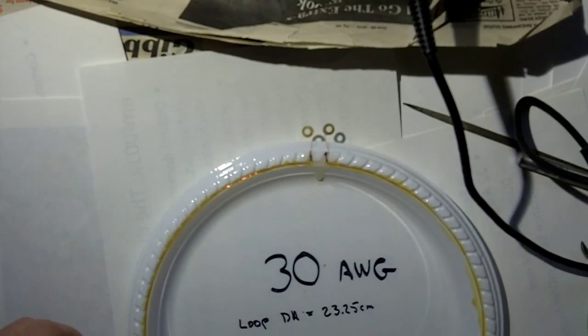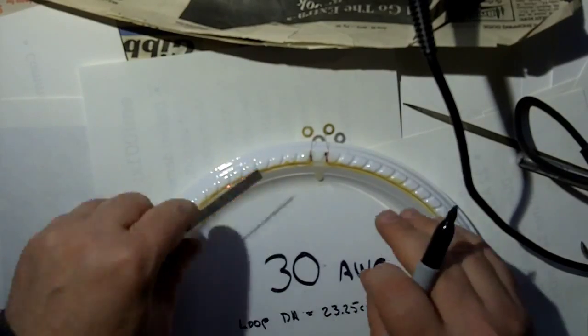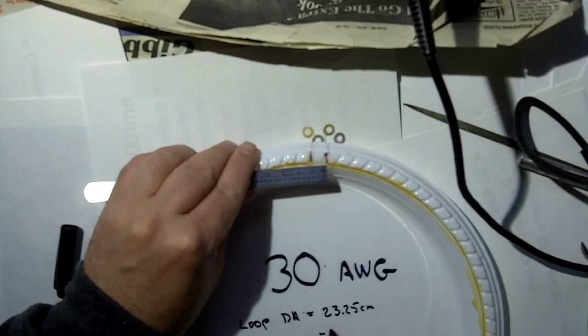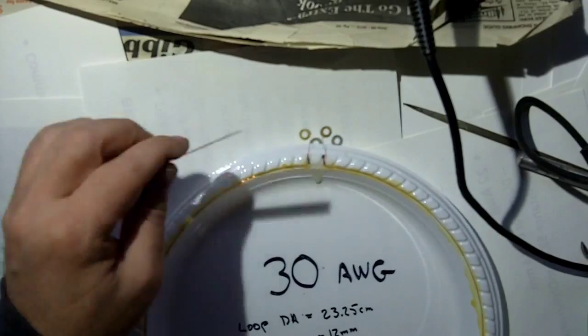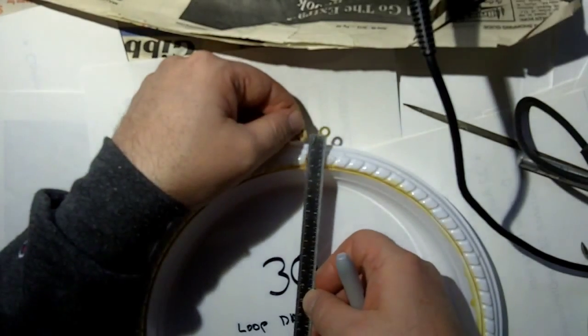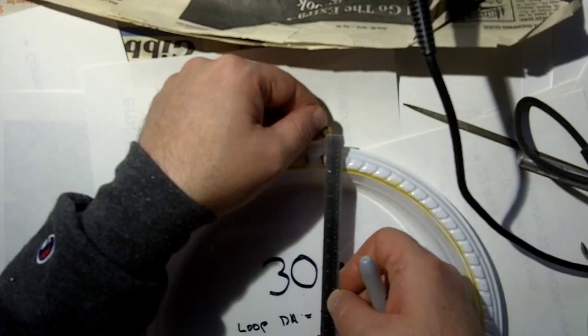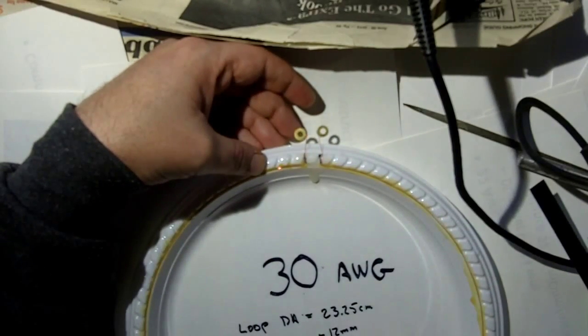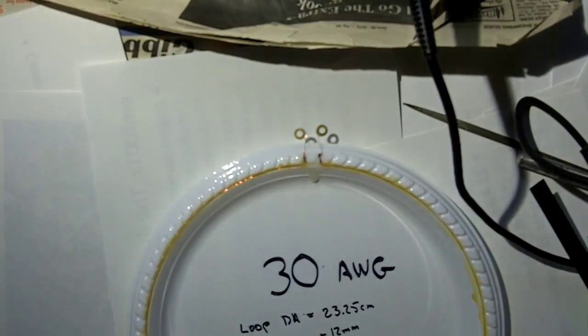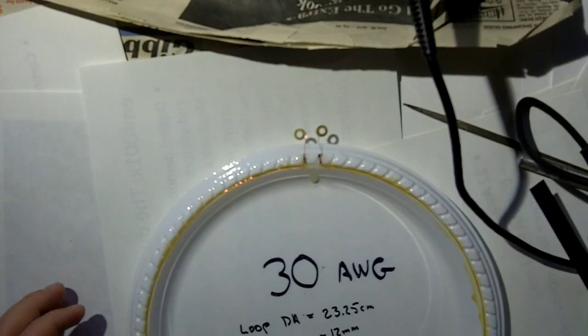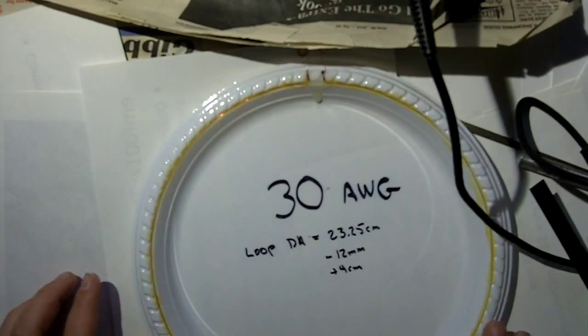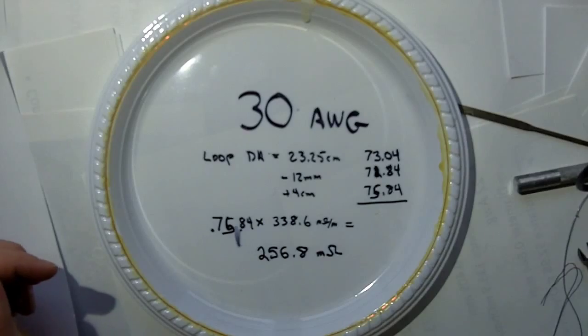We're going to use that to compute the perimeter of the loop. From that, we're going to subtract 12 millimeters. Then we're going to add approximately 2 centimeters, or 4 centimeters total, for the leads. That should give us the total length. So when we multiply that length times the resistance table, we're going to come up with a loop resistance that we should expect to read.